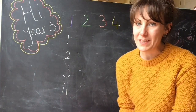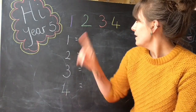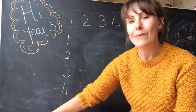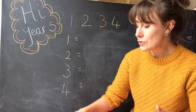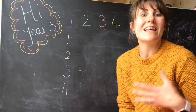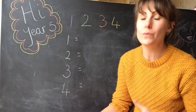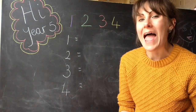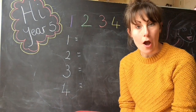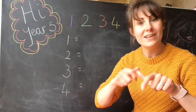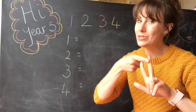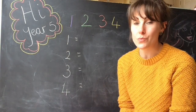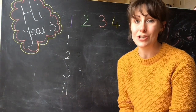Your problem this week involves four numbers: 1, 2, 3 and 4, and what we would like you to do is to use those four numbers to create every single number between 1 and 20. You can use any of the four functions that we know — addition, subtraction, multiplication or division. It's up to you which ones you think you're going to need to use.